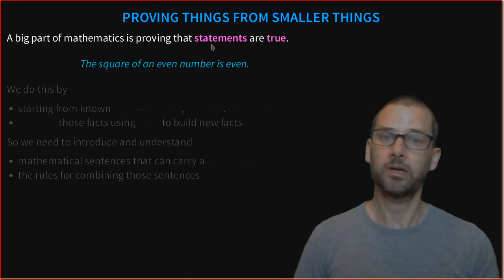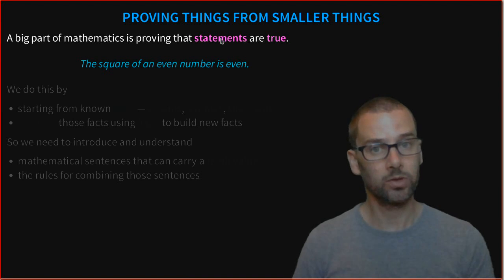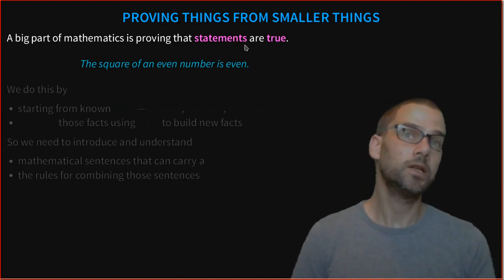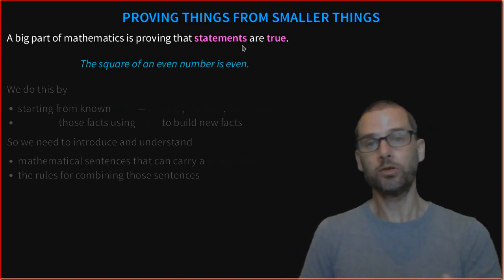In mathematics, we typically prove big things from small things. Those very smallest pieces that we're going to play with are statements. A big part of mathematics is proving that statements are true. We take smaller statements that we know are true and use those to prove bigger, more interesting statements are true.